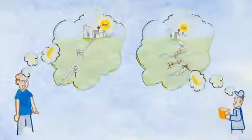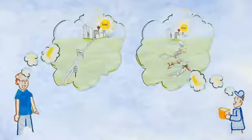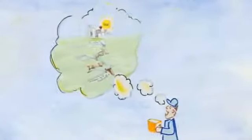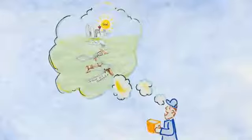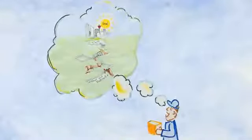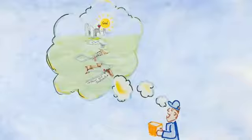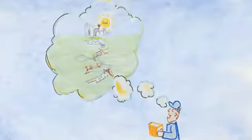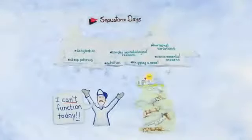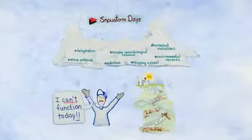Remember, in Module 2, we used roads as an analogy to describe the differences experienced by individuals with FASD. If individuals with an FASD have gravel roads, their brains can take longer and experience more challenges getting information from point A to point B. When individuals with an FASD have an off or snowstorm day, moving information around the brain can be next to impossible.